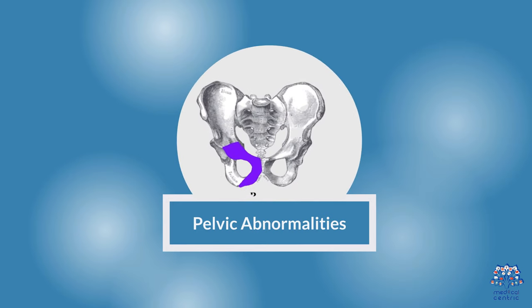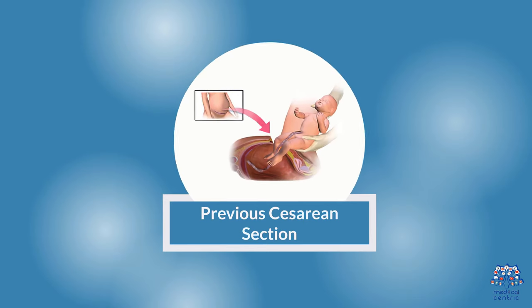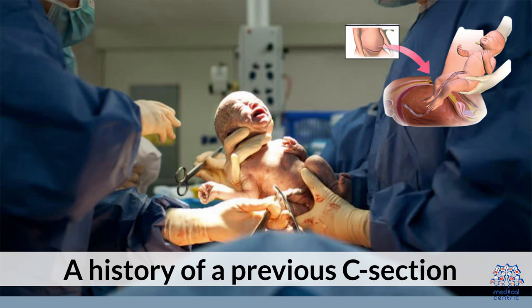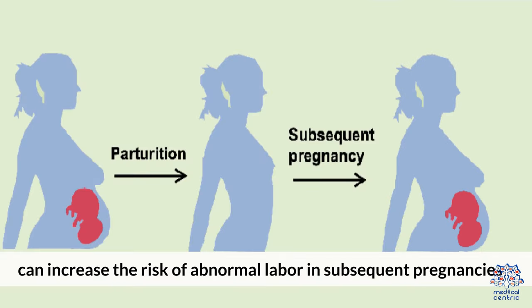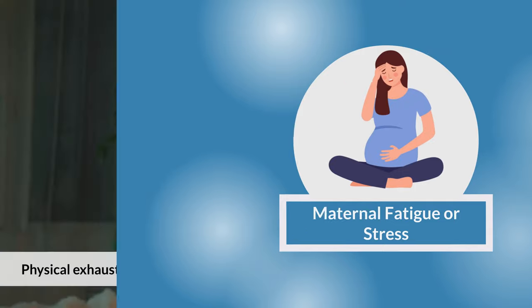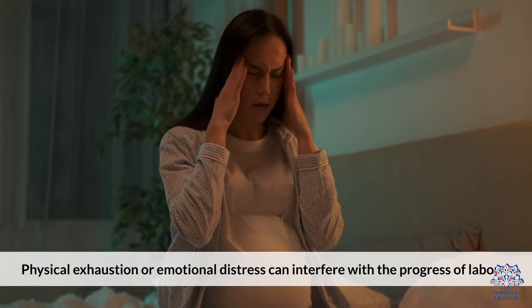5. Pelvic abnormalities: certain pelvic deformities or tumors may obstruct the baby's passage through the birth canal. 6. Previous caesarean section: a history of a previous C-section can increase the risk of abnormal labor in subsequent pregnancies. 7. Maternal fatigue or stress: physical exhaustion or emotional distress can interfere with the progress of labor.